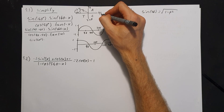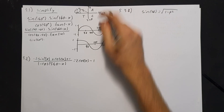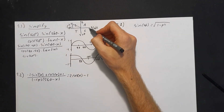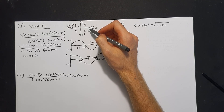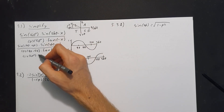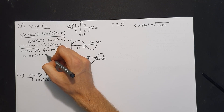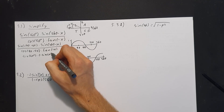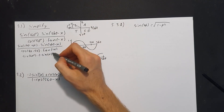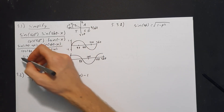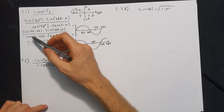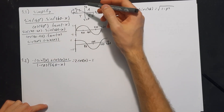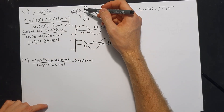For sine of (360 minus x): going to 360 and subtracting x moves us downward into the fourth quadrant, where sine is negative. So sine of (360 minus x) becomes negative sine of x.